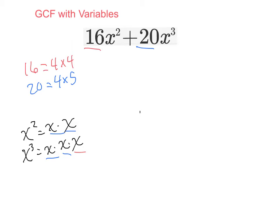Right, now go back to the start of the problem, 16x squared plus 20x cubed, and factor each term. Okay, 16x squared becomes 4x squared times 4, and 20x to the third becomes 4x squared times 5x. So in factored form, 16x squared plus 20x to the third becomes 4x squared parenthesis 4 plus 5x.